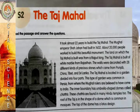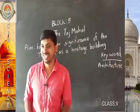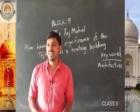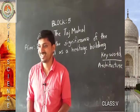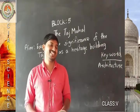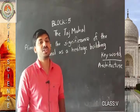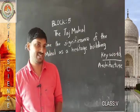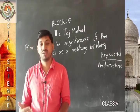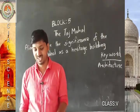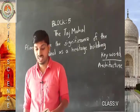The roof of the Taj Mahal is in the shape of a dome, which is common in mosques. The top of the dome has a lotus design. Now you have got some idea about Taj Mahal. We discussed some important information about the Taj Mahal.